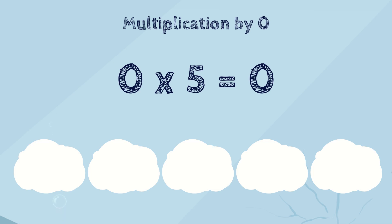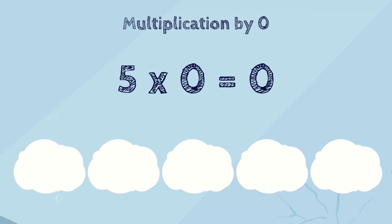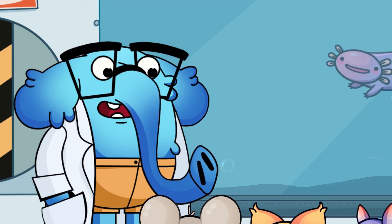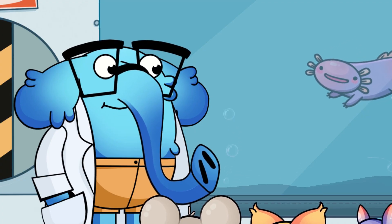So, if zero is multiplied by any number, the answer is always zero. We also know that we can move numbers around and it doesn't change the answer. So it doesn't matter where your zero is placed. If you just see the number zero as one of the numbers multiplied in your problem, then your answer is zero. So, kids, what is a million times zero?